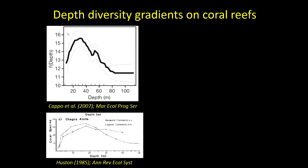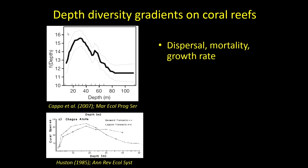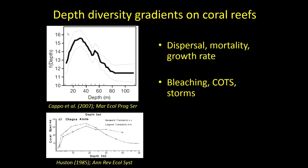This is an example from Chagos Atoll for corals, where we see a relatively similar hump-shaped pattern both on the outside of the reef and inside the lagoon. It's important to understand how species are distributed across depth and how relative abundance changes, because important ecological processes like dispersal, mortality, and growth all vary across depth gradients. We also know that the frequency and severity of disturbances - things like bleaching, cyclones, and storms - also varies across depth.